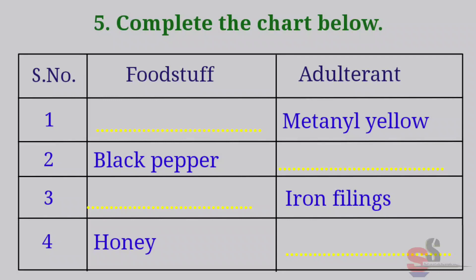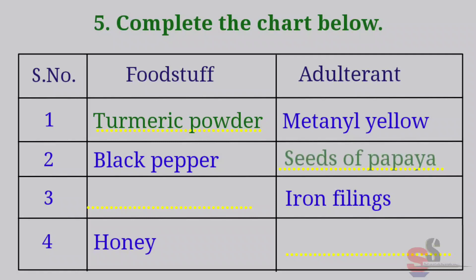Question 5: Complete the chart below. Serial number, foodstuff, adulterant. First: adulterant is metanil yellow, foodstuff is turmeric powder. Second: foodstuff is black pepper, adulterant is seeds of papaya. Third: adulterant is iron filings, foodstuff is rava. Fourth: foodstuff is honey, adulterant is water or jaggery.